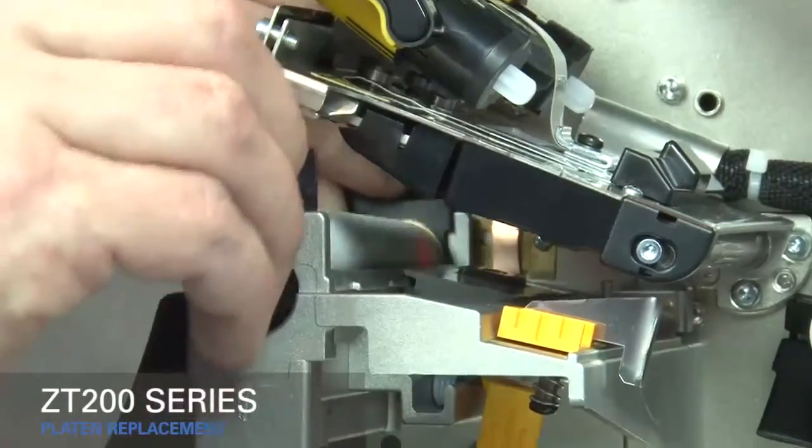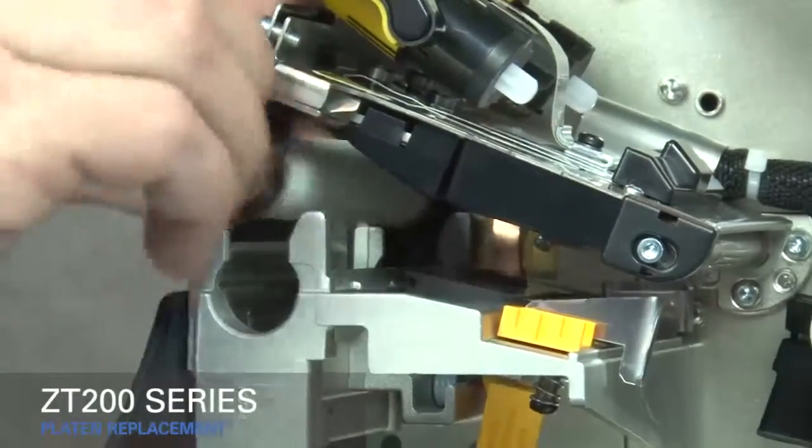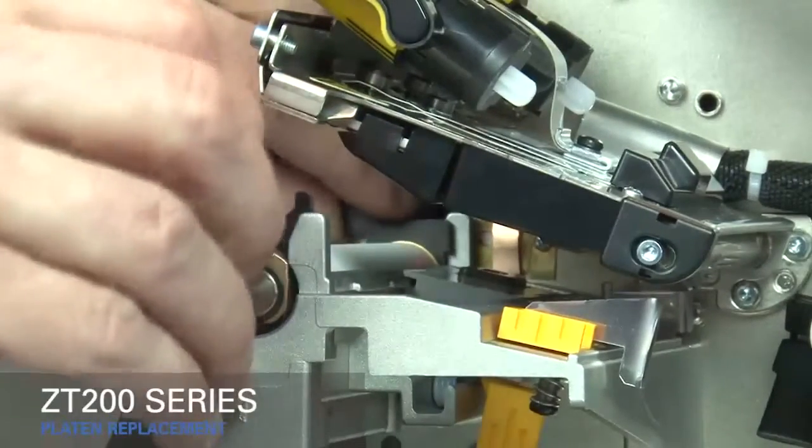Lift the old platen assembly out. Set the new platen assembly into the lower print mechanism.